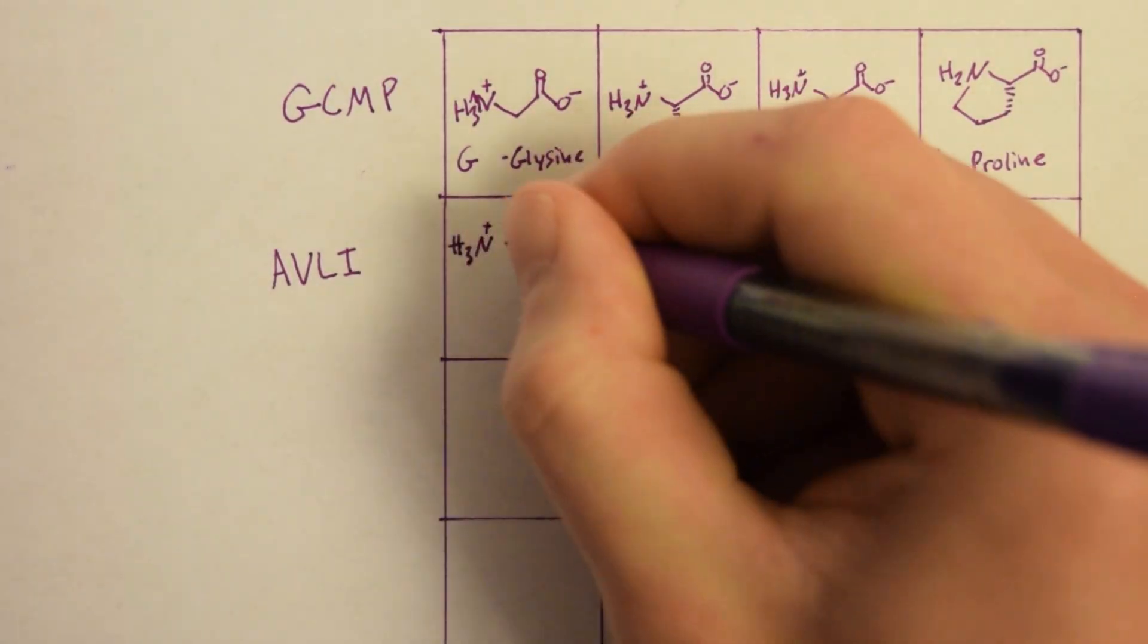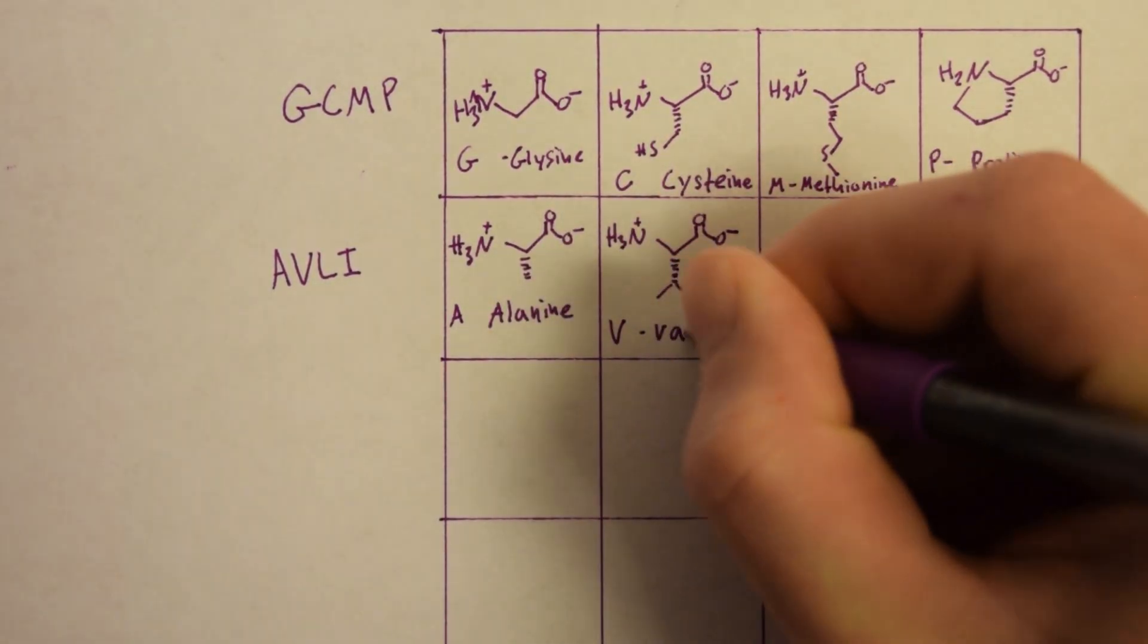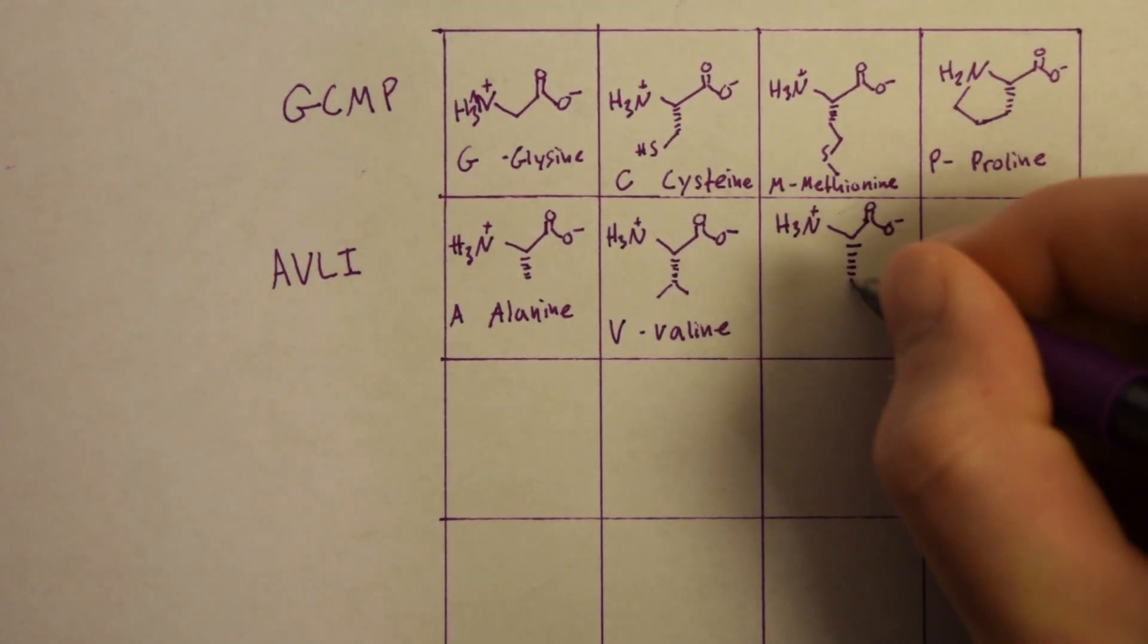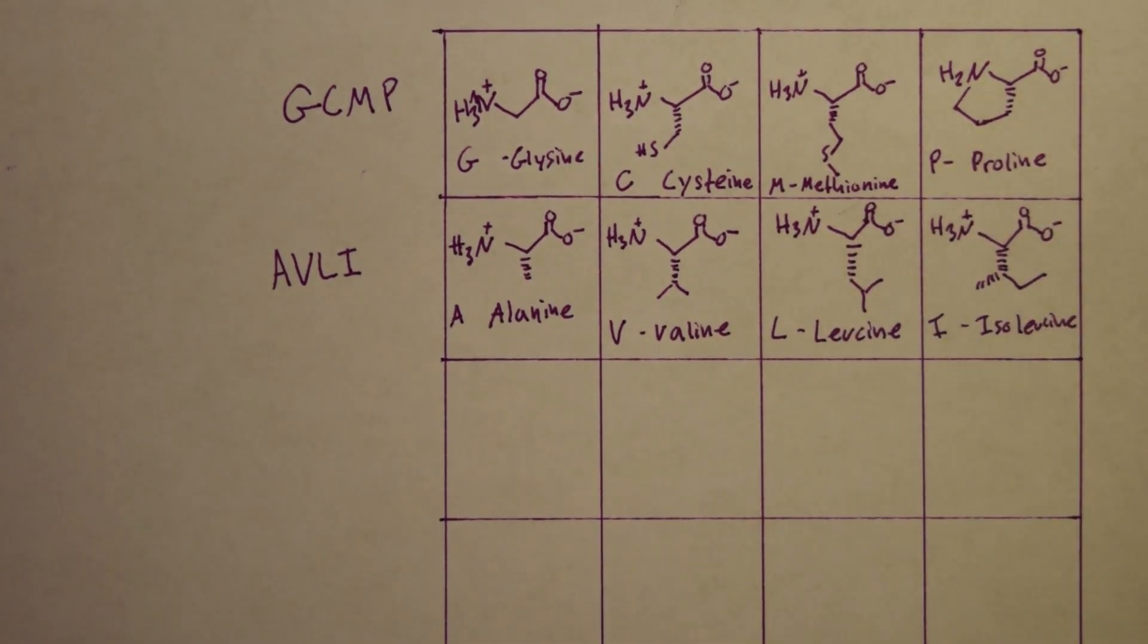Next line is AVLI. Alanine has a methyl group. Valine has three carbons that look like a V. Leucine has an additional carbon than valine. Isoleucine is an isomer of leucine and a methyl group is removed to the first carbon on the side chain.